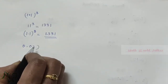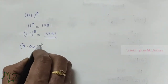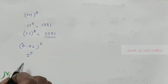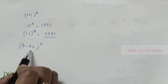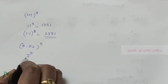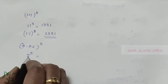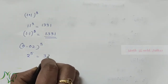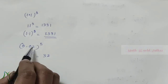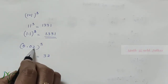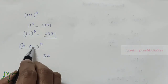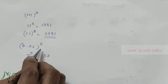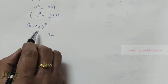0.02 whole raise to 5. Here we need to find 2 raise to 5, since the number without decimal is 2. 2 raise to 5 is 2 × 2 × 2 × 2 × 2 — multiplying 2 five times gives 32. In 0.02 there are 2 decimal places, and the power is 5, so 2 times 5 equals 10. In the answer there should be 10 decimal places.